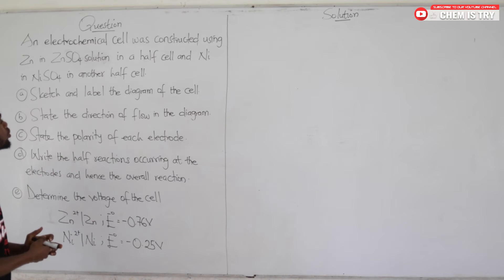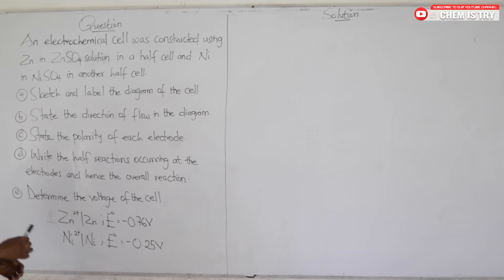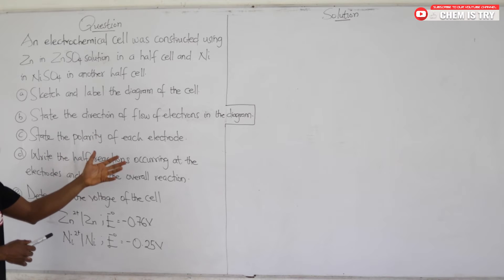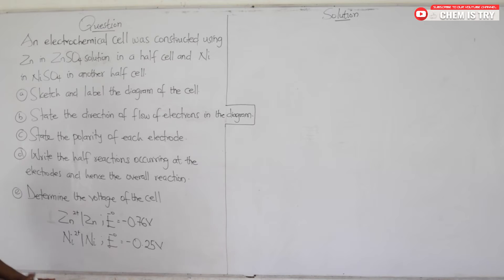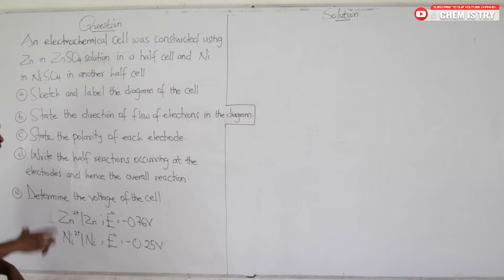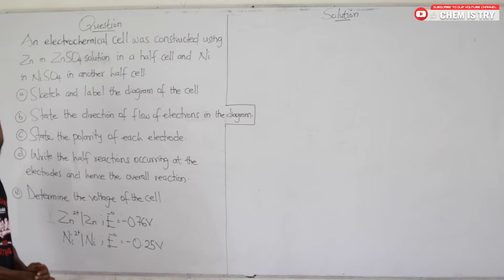An electrochemical cell was constructed using zinc in zinc sulfate solution in a half cell and nickel in nickel sulfate solution in another half cell. The questions are: (a) sketch and label the diagram of the cell, (b) state the direction of flow of electrons in the diagram, (c) state the polarity of each electrode, (d) write the half reactions occurring at the electrodes and hence the overall reaction, and (e) determine the voltage of the cell.